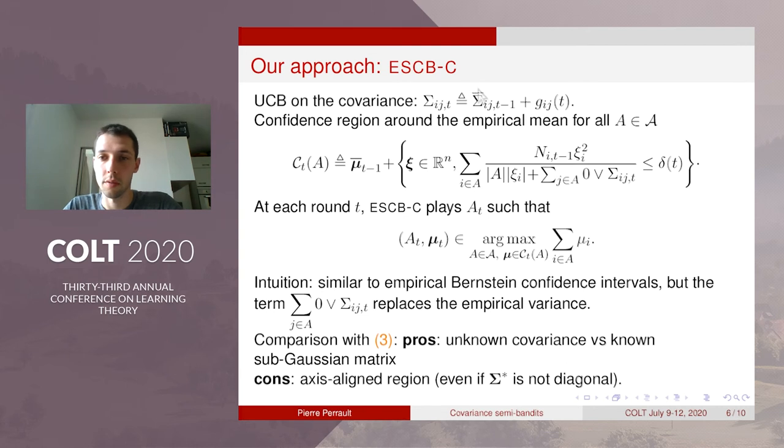So here is the empirical covariance and this is the empirical mean vector and this region is defined for every action and actually you already have an intuition that it is similar to Bernstein confidence intervals but instead of the empirical variance we have a covariance term that appears.